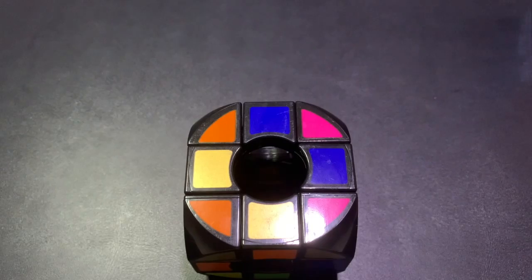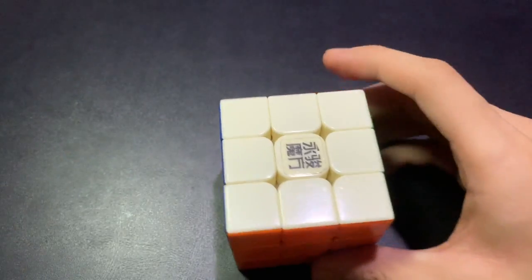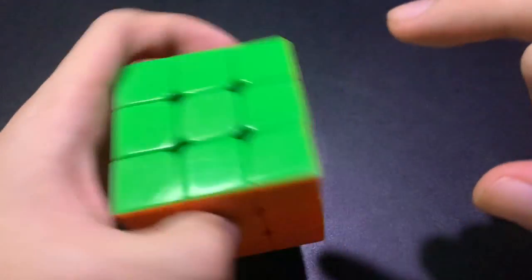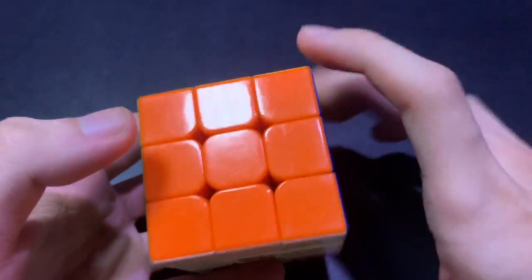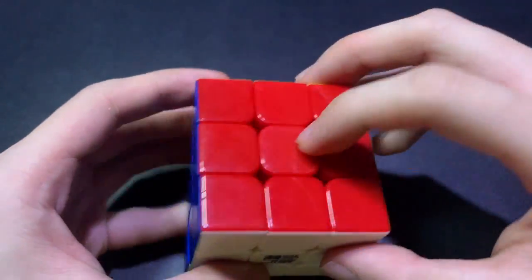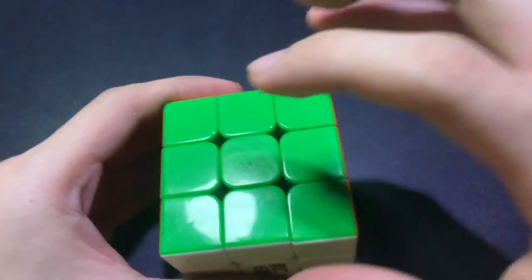The void cube's color scheme is also the same as the regular 3x3, where white is always opposite to yellow, orange is always opposite to red or pink, and blue is always opposite to green.